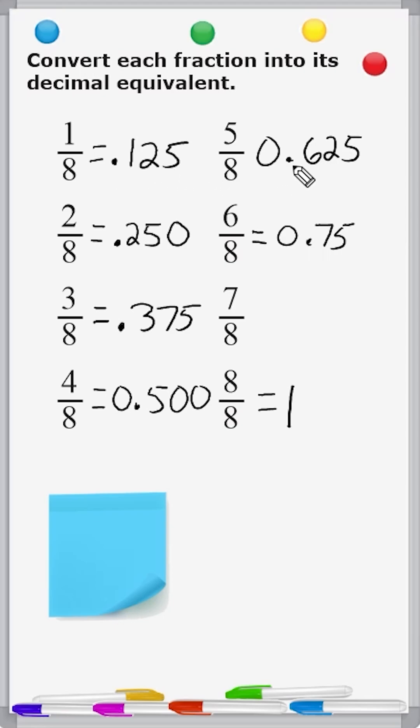Add another 0.125 to this, we get 6 eighths, or 0.750. And adding another 0.125 to this, that would give us 0.875.